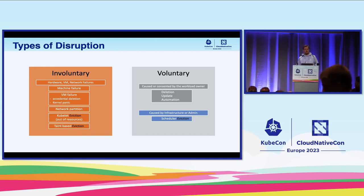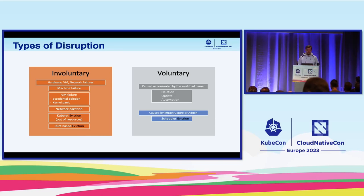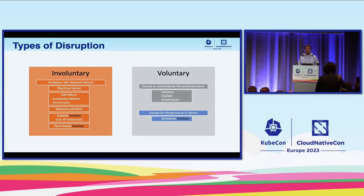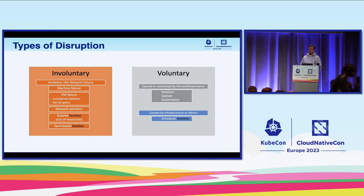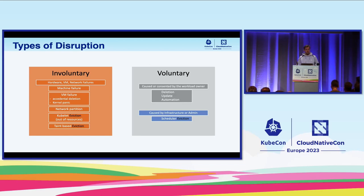Another category is caused by cluster administrators or infrastructure owners, where a cluster administrator can disrupt workloads by draining nodes to perform repair, maintenance, or upgrades. Nodes can also be drained in response to scale-down events when using a cluster autoscaler. Finally, there is the scheduler, which can invoke a preemption path, disrupting workloads when seeking room to run pods in a high-priority class.